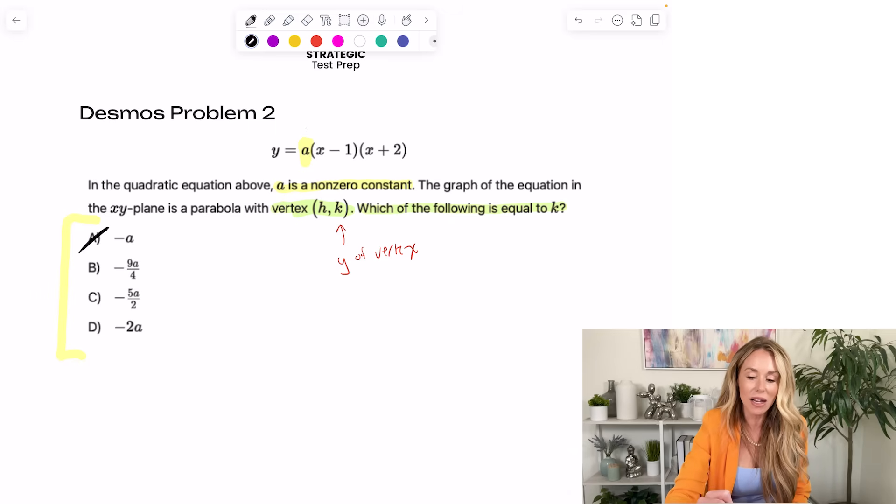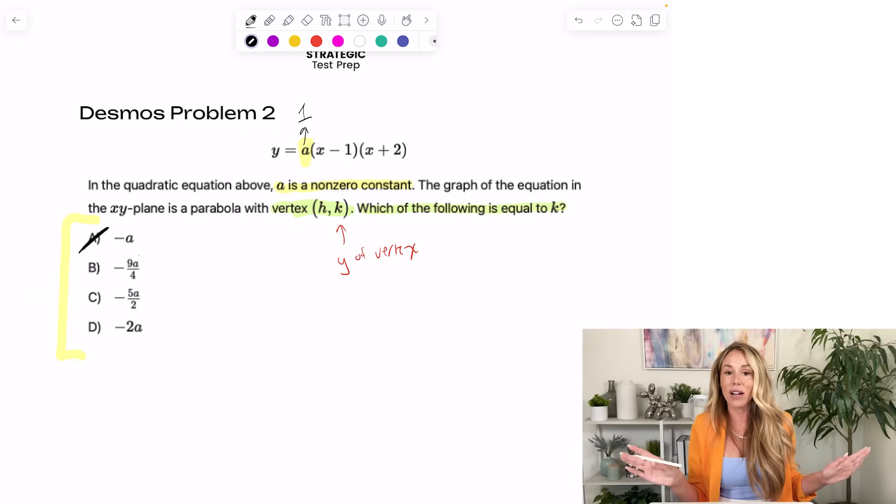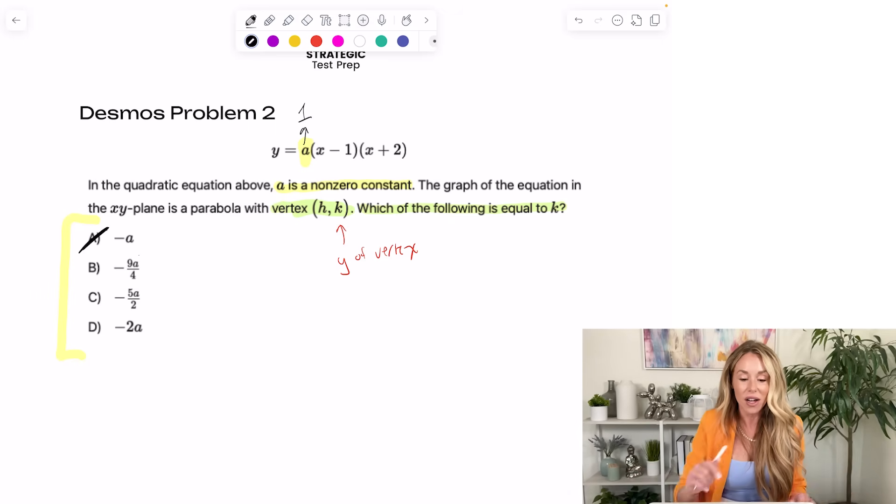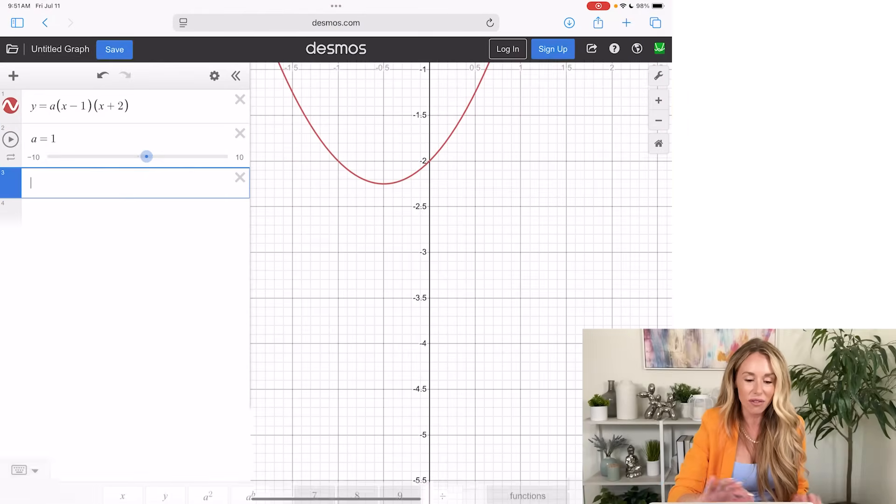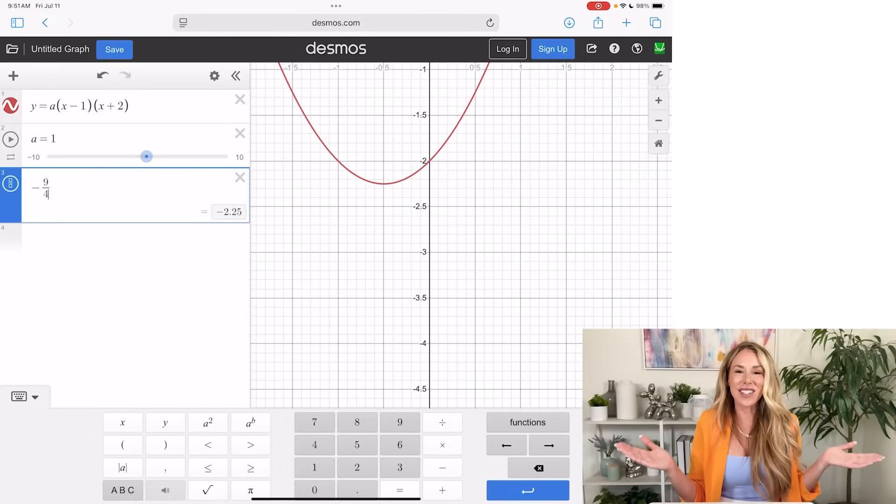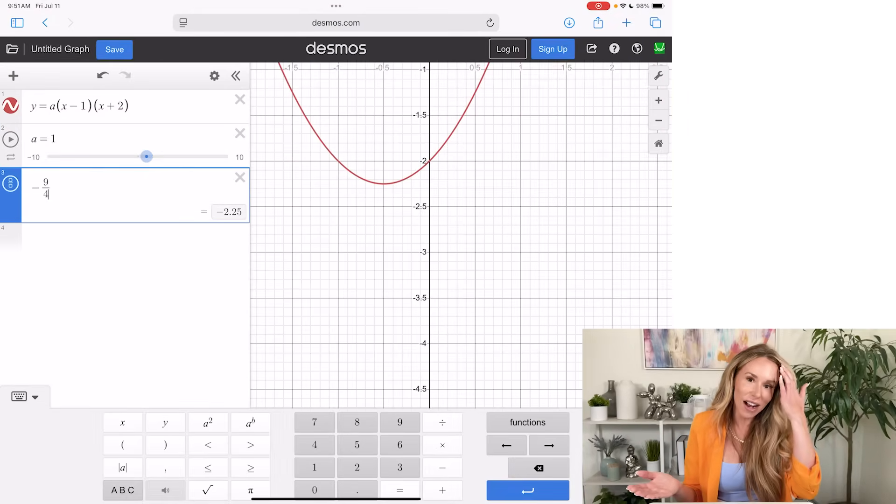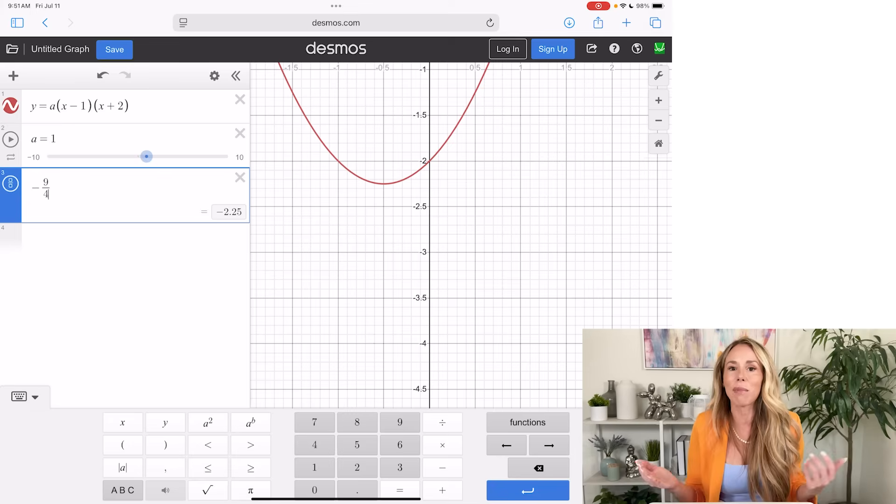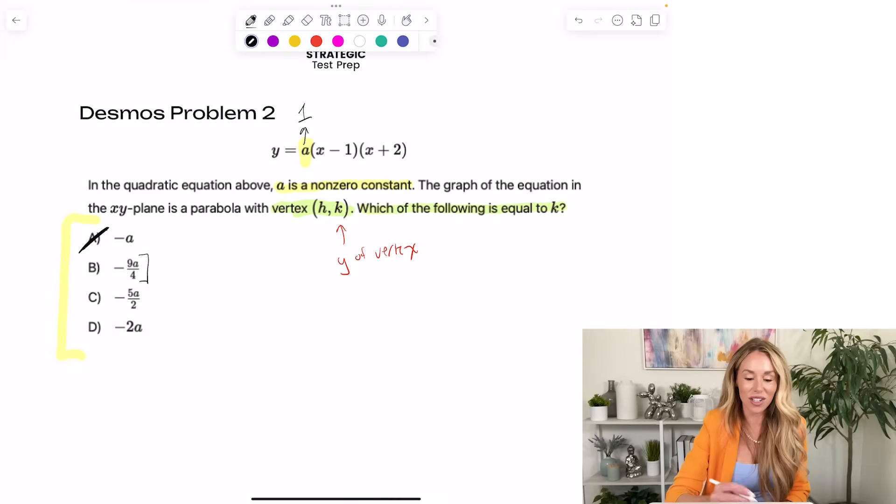It looks like the vertex is at negative 220, 2.25, because I made A one. So that would be negative one. That is not where the Y coordinate of the vertex is at. The Y coordinate of the vertex is at negative 2.25. And you know, if you're not good at mental math, you can always on the next line, test negative nine fourths. And as you can see, you get negative 2.25, because you're just going to multiply that by A, which is one. So that's what we want. That's why the answer is going to be B.